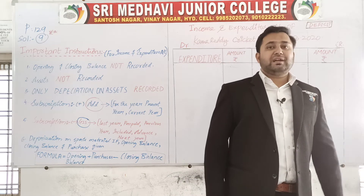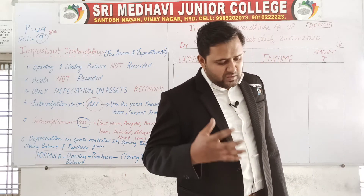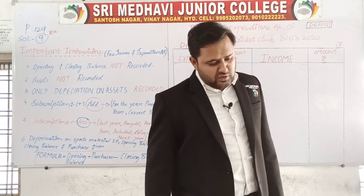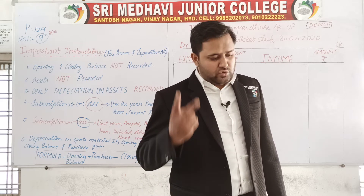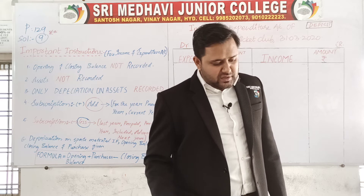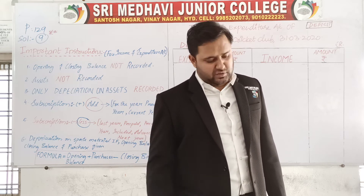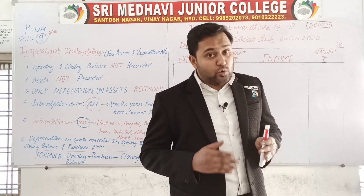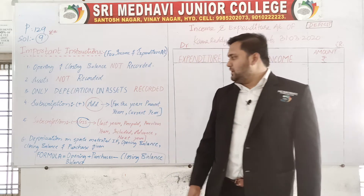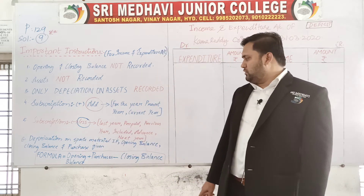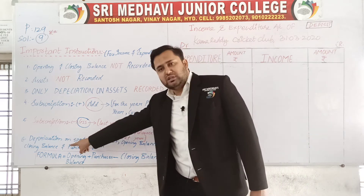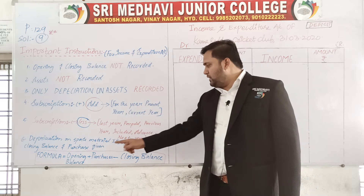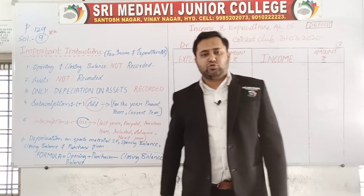Before solving the problem, let us look at the additional information and adjustments. First, subscription received included a previous year amount, so we have one adjustment to subtract. Second, outstanding subscription is given, so we have another adjustment to add — giving us two adjustments on subscription. Third, provide 300 rupees depreciation on ground moving machine. Fourth, opening balance and closing balance of sports material is given. For depreciation on sports material, use the formula: opening balance plus purchases minus closing balance.